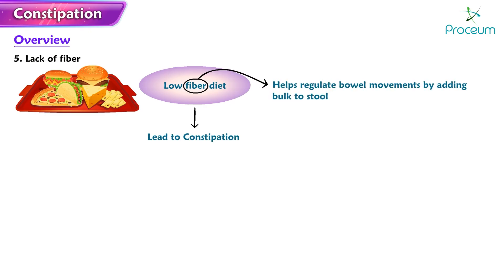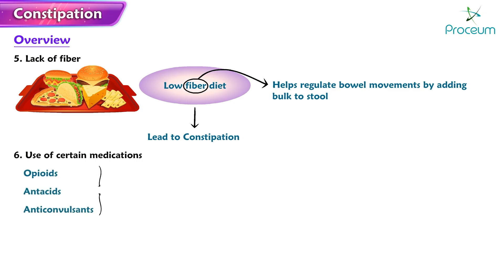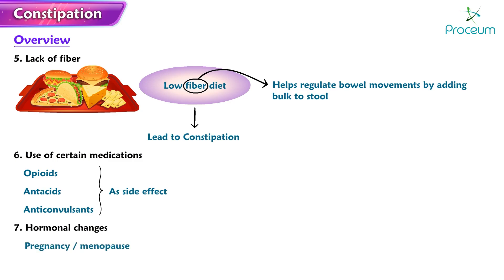Six: use of certain medications. Certain medications, such as opioids, antacids, and anticonvulsants, can cause constipation as a side effect. Seven: hormonal changes. Hormonal changes, such as those that occur during pregnancy or menopause, can affect bowel movements and lead to constipation.